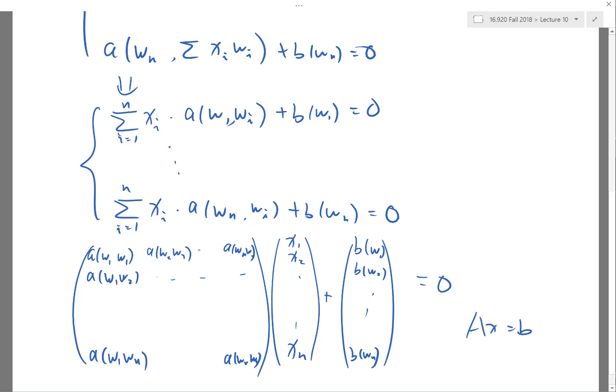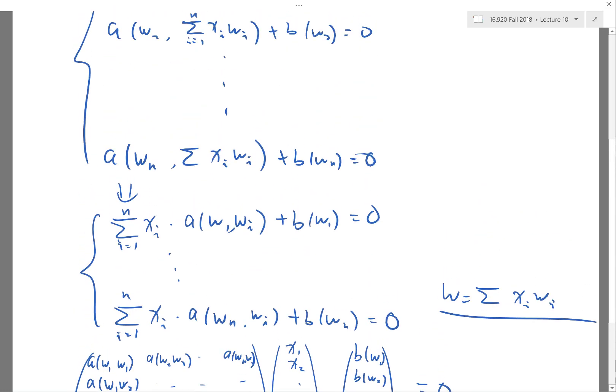This is now just solving AX = B. We get the X, plug X back into W = summation of Xi*Wi, we get the solution W, and that's the way we do finite elements.